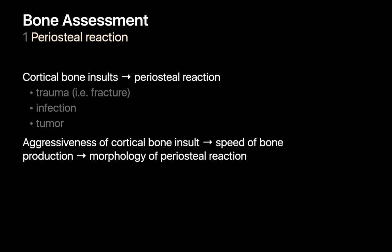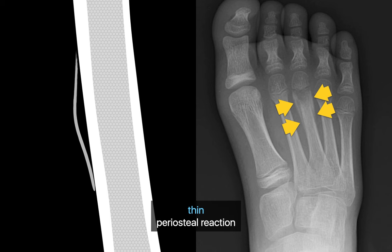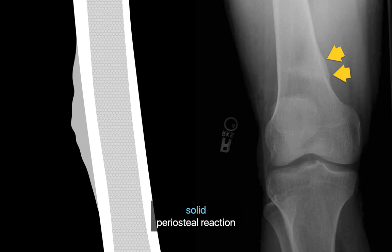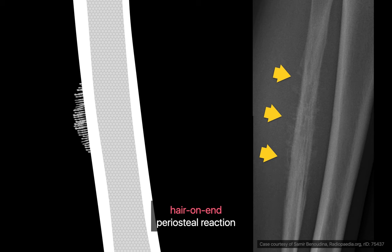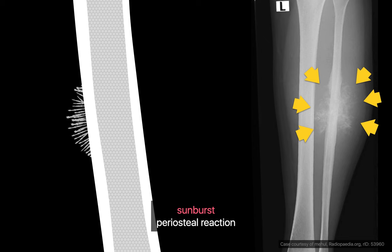Whenever cortical bone experiences an insult like a fracture, infection, or tumor, and the periosteum gets focally elevated, a periosteal reaction may occur, which lays down new bone superficial to the existing cortical bone surface. The appearance of this new bone is influenced by how intense or aggressive the insult was and how long it lasted. Non-aggressive insults generally result in periosteal reaction patterns that appear thin or solid, while aggressive insults may result in laminated onion skin, perpendicular hair on end, or sunburst periosteal reaction patterns.